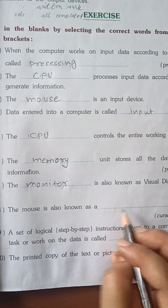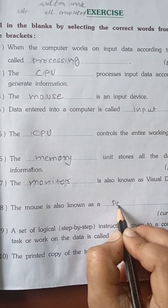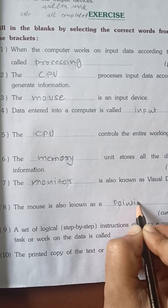The mouse is also known as, what will we say? Not cursor. Pointing device. What will we say? Pointing device.